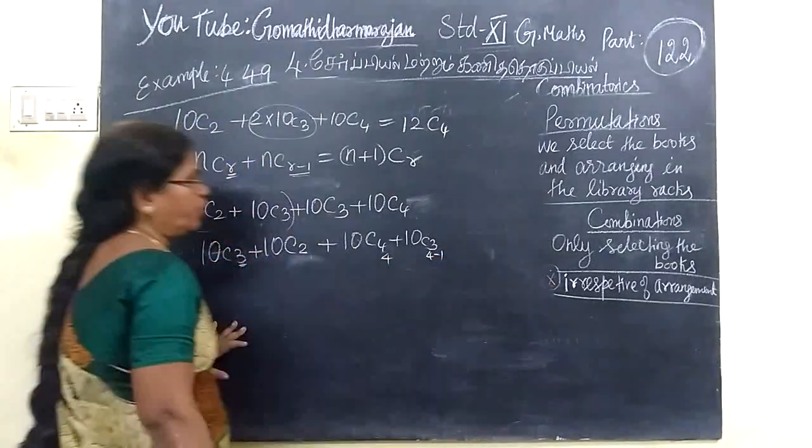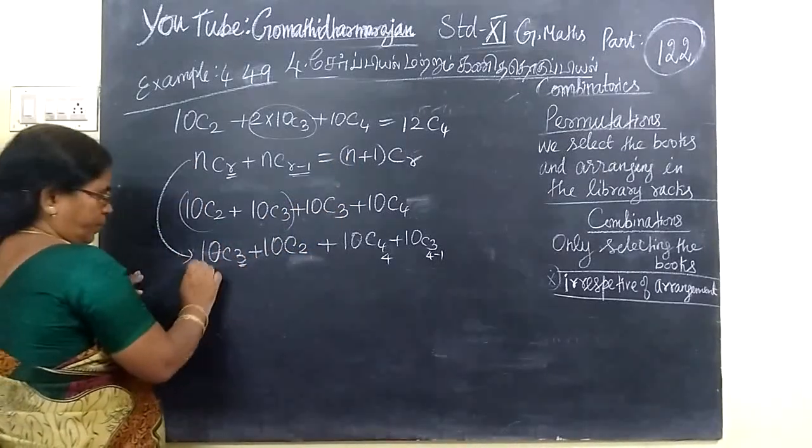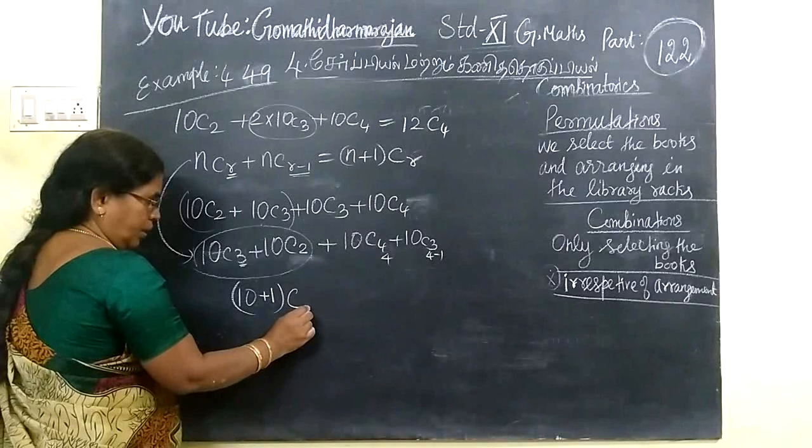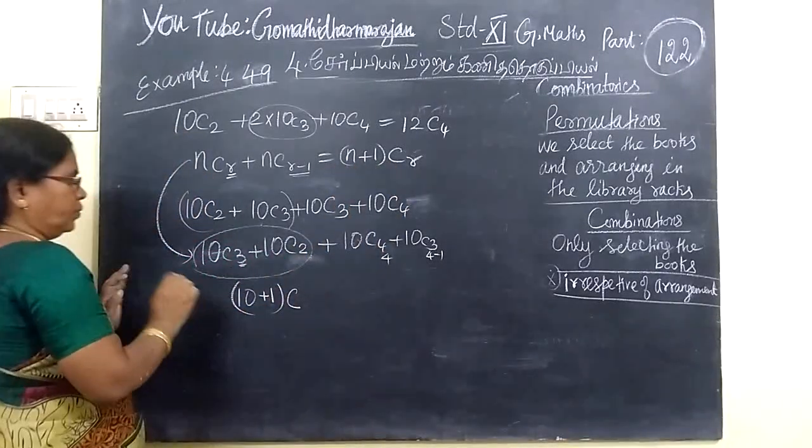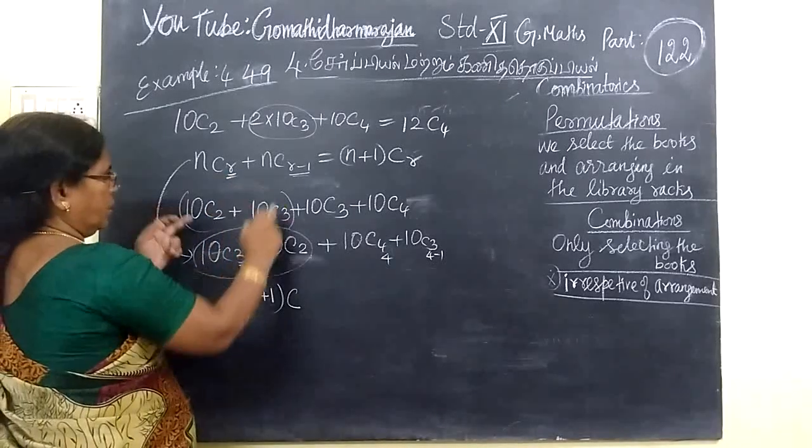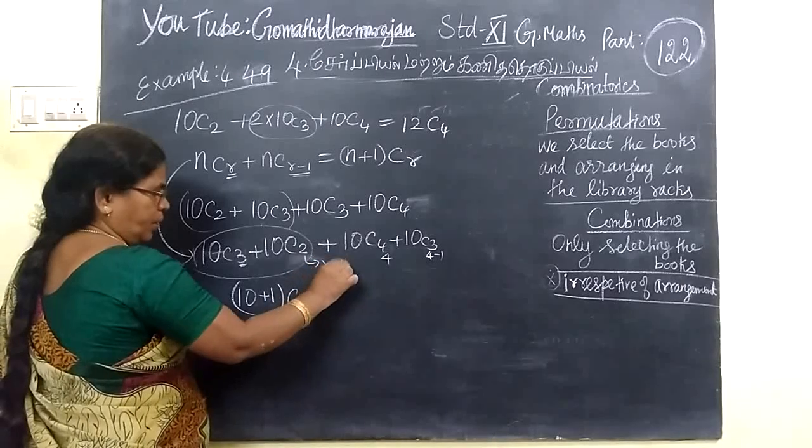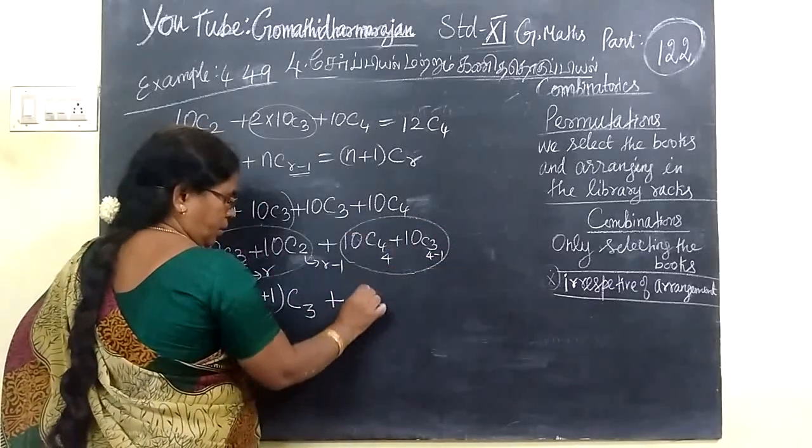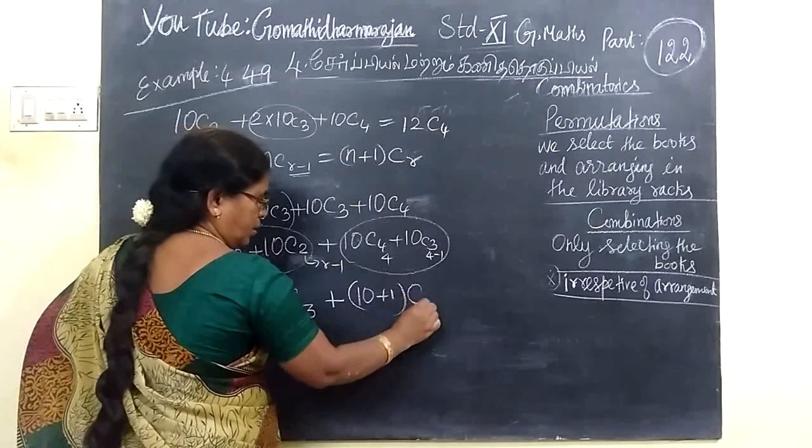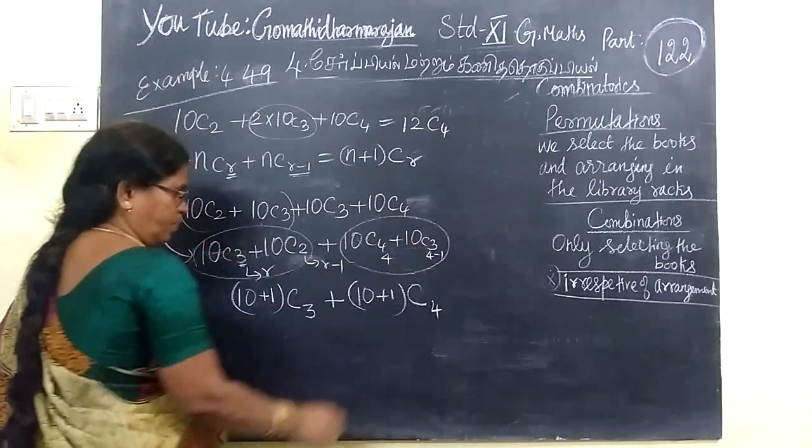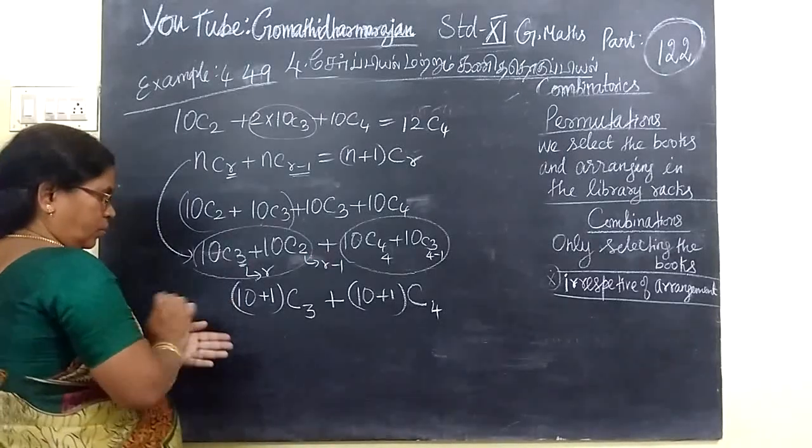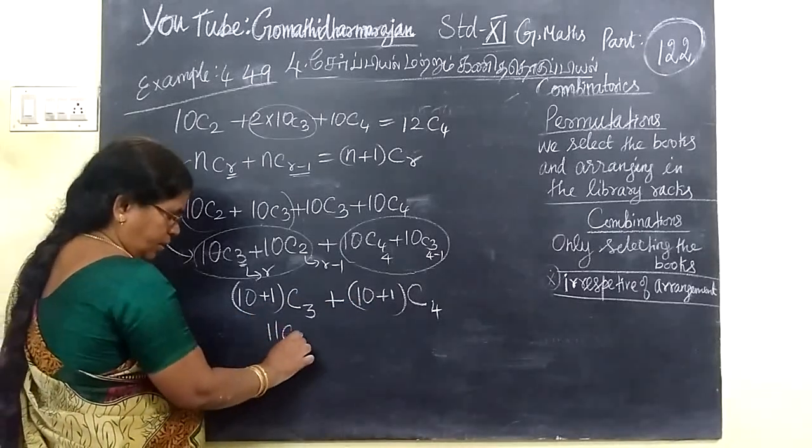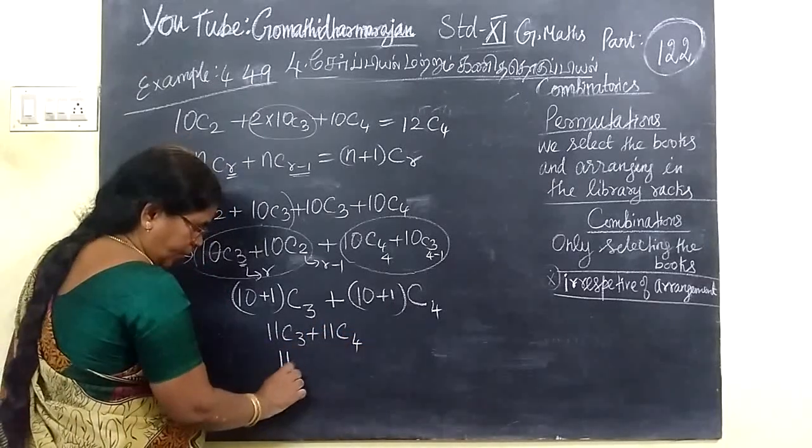NCR is equal to (N+1)CR. R is R-1, so this is equal to 11C3 plus 11C4. This is R, this is R-1. So this is nothing but 11 plus 1, then C R. R is 4.